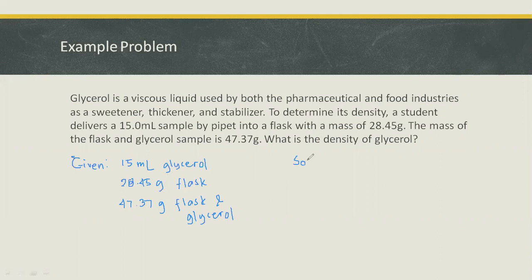To solve for density, we know that density is equal to mass of the substance over volume of the substance. So we already have 15 milliliter, which is the volume of the glycerol or the substance.